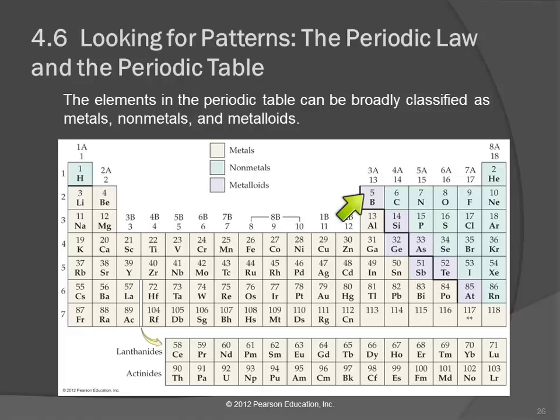In between we have the metalloids, or the semi-metals, and they have properties that are kind of in between. On most periodic tables, you see this stair-step line. Even if the periodic table is not color-coded, that line is a dividing line between metals and nonmetals. Right along that line is where the semi-metals are.